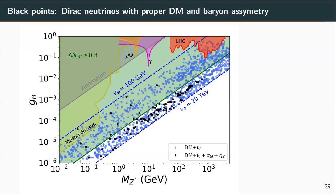Still, there is an open parameter space between 7 TeV and for example 20 TeV where in principle the black points satisfy everything, including this cosmological constraint. So any of these models is able to explain small neutrino masses, dark matter through the Dirac fermion dark matter candidate compatible with direct detection constraints, and finally the black points are also able to explain the proper matter-antimatter asymmetry of the universe — so this baryogenesis mechanism works.